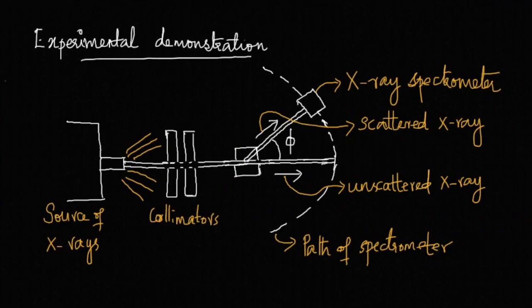Now for the experimental demonstration, we have a monochromatic X-ray source having a single wavelength. It is directed at a target. It passes through collimators to narrow down the beam, hits the target, and the scattered photons are caught using a spectrometer. The spectrometer may be moved through different angles and we may catch the intensity of the scattered photons.